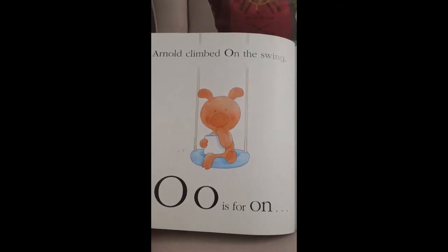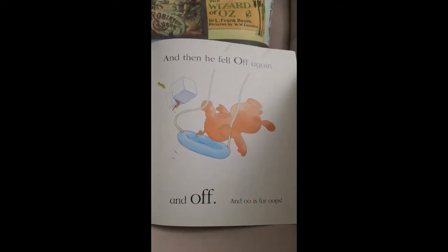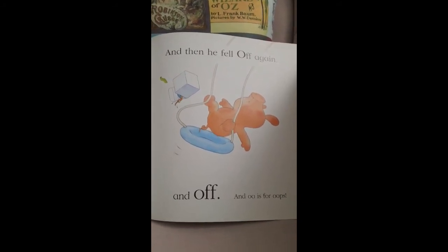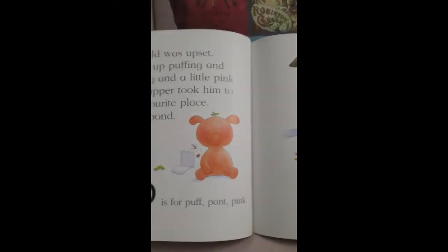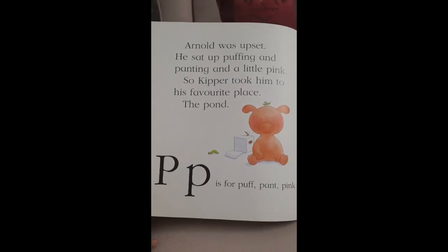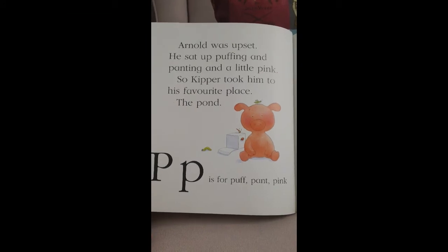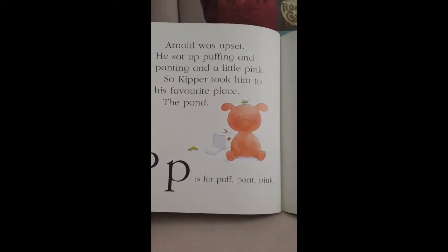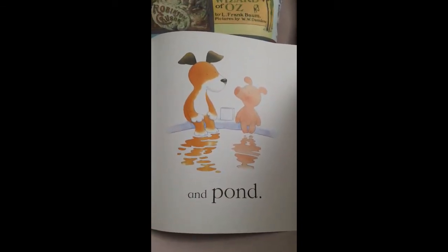Arnold climbed on the swing. O is for On. And then he fell off again. O is for Off. And O is for Oops. Arnold was upset. He sat up puffing and panting and a little pink. So Kipper took him to his favourite place — the pond. P is for Puff, Pant, Pink and Pond.